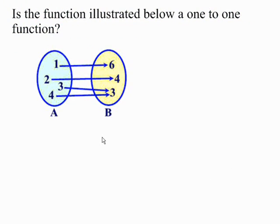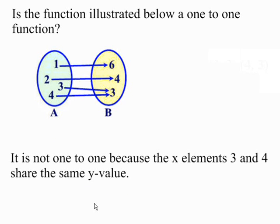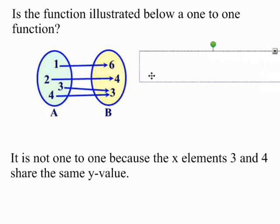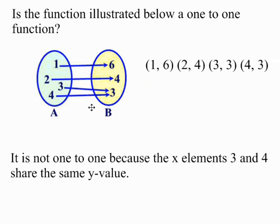Try this one. This time you're given a diagram. Is the function illustrated below a one-to-one function? It is not one-to-one because the x-elements 3 and 4 share the same y-value. That means a y-value is repeating, because if you were to rewrite this diagram as ordered pairs, you can see clearly that the y-value 3 repeats.